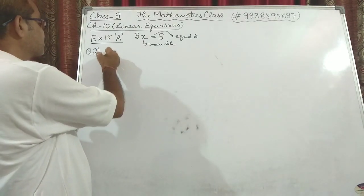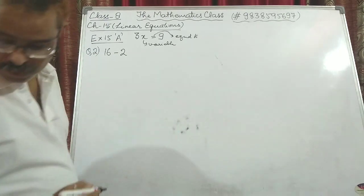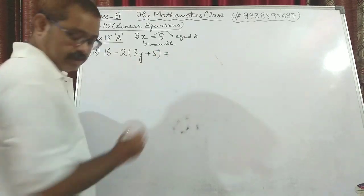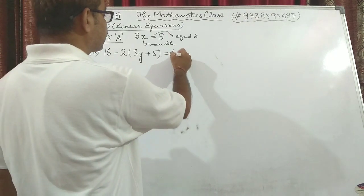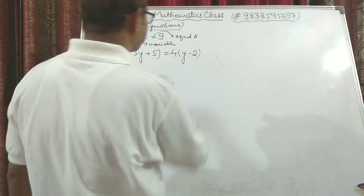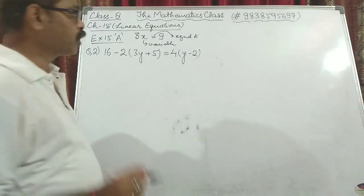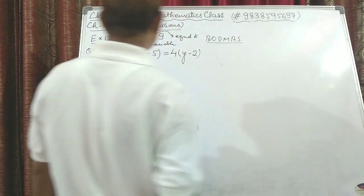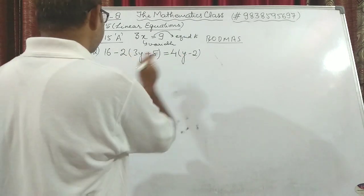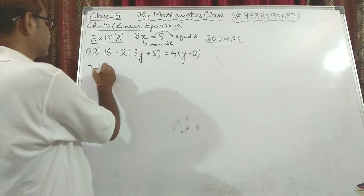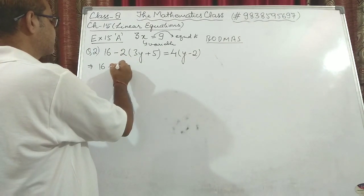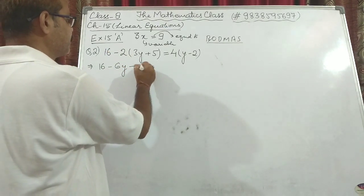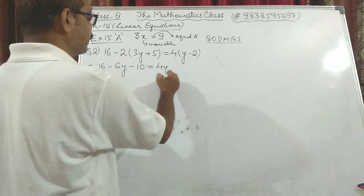Question 2 is: 16 − 2(3y + 5) = 4(y − 2). First, according to BODMAS, we open the brackets. This can be written as 16 − 2×3 which is 6y, so minus 6y, and 2×5 is 10 so minus 10, is equal to 4y minus 8.